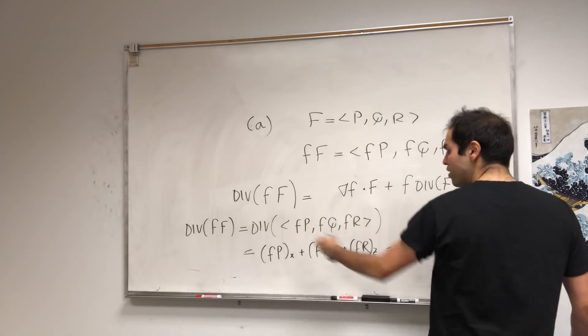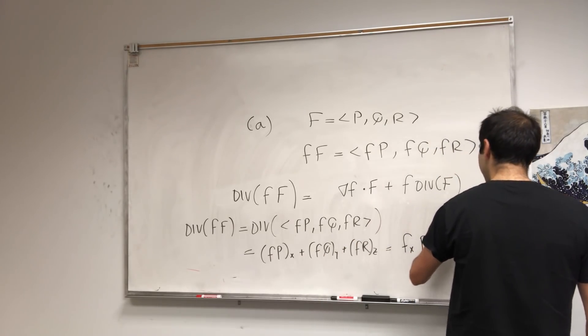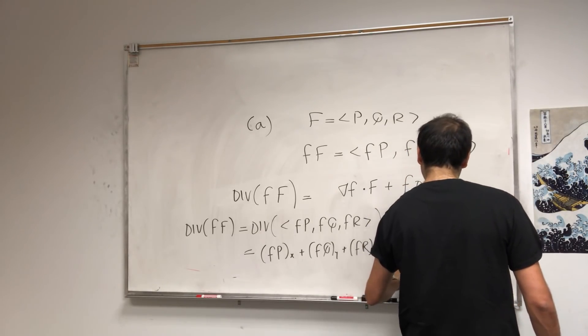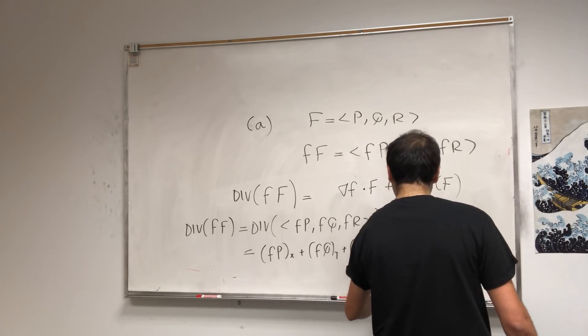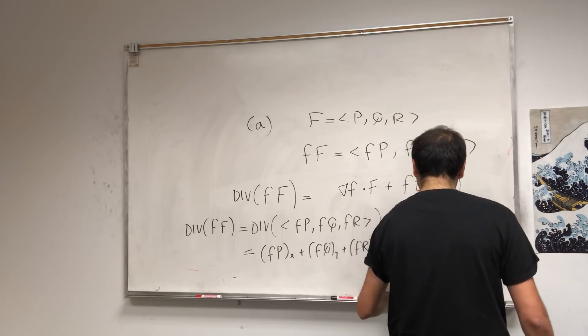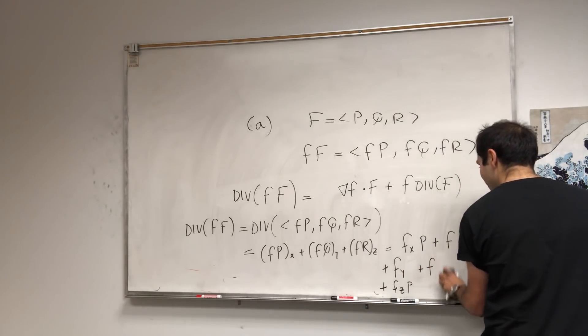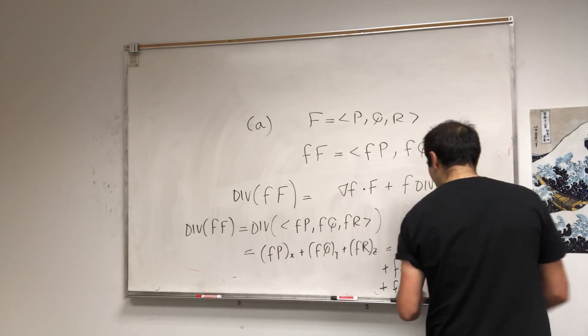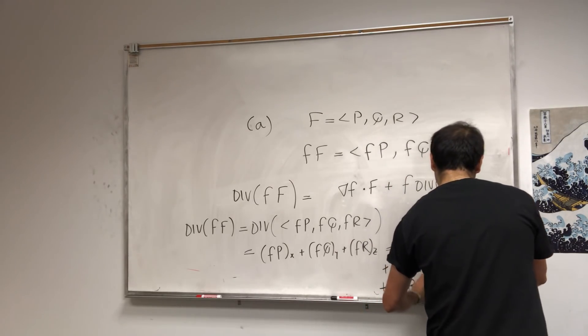And now notice you can use a product rule. So it's f_x times P, plus f times P_x, plus f_y times Q, plus f times Q_y, and then plus f_z times R, plus f times R_z.